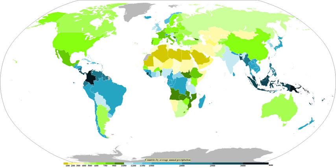On the large scale, the highest precipitation amounts outside topography fall in the tropics, closely tied to the intertropical convergence zone, the ascending branch of the Hadley Cell. Mountainous locales near the equator in Colombia are among the wettest places on Earth. North and south of the tropics are regions of descending air that form subtropical ridges where precipitation is low, making up most of Earth's deserts. An exception is Hawaii, where upslope flow due to trade winds creates one of the wettest locations on Earth. In Asia during the wet season, the flow of moist air into the Himalayas produces some of the greatest rainfall amounts measured on Earth in northeast India.